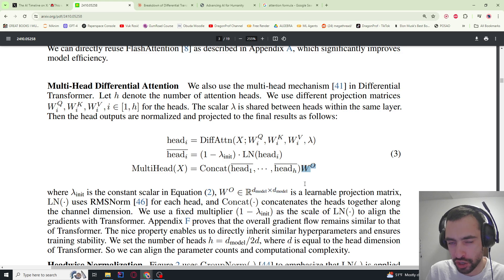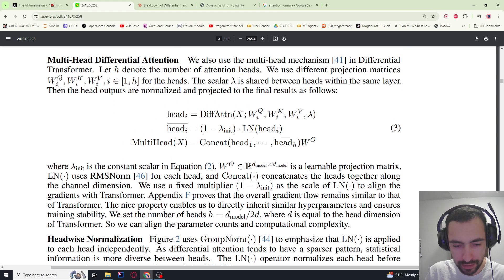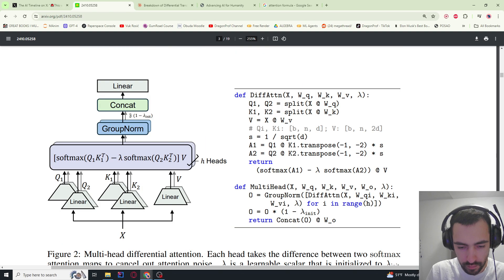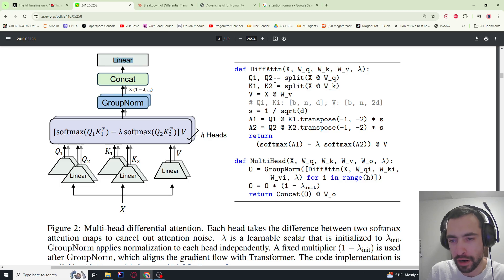I'm not exactly sure what the function of this learnable parameter is—maybe to change the dimensions, maybe to learn something, or to convert this concatenation into some fixed matrix size. If we take a look at this graph that explains the same thing, we have some input, split it into two Q matrices, two key matrices, one value matrix. We have a bunch of heads here. Each head has this formula I described earlier, group normalization which is RMS norm in this case, we multiply with this constant, concatenate, pass through the linear layer.